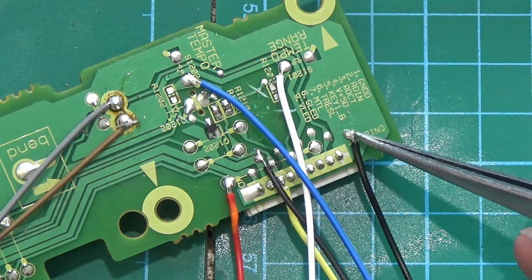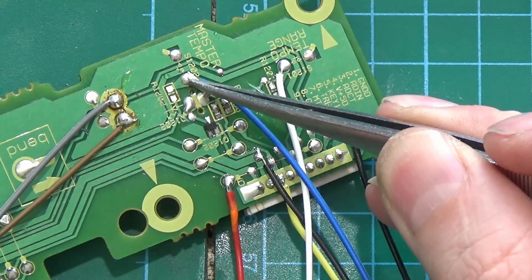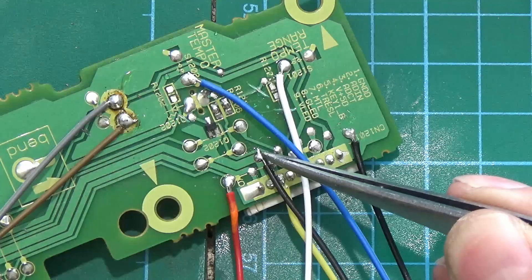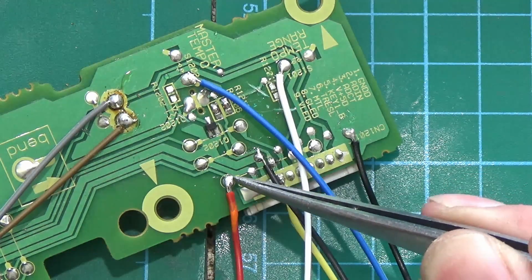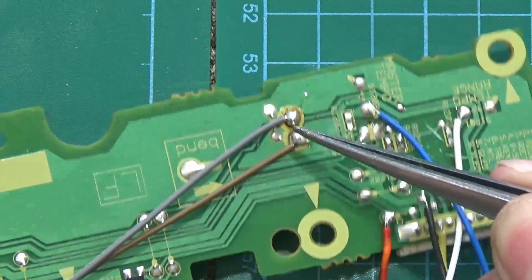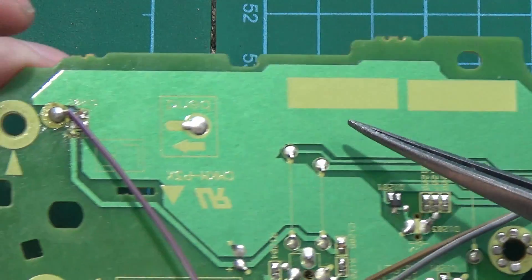So we have ground, we have the button wires, we have the 12 volt ground and the 12 volt in the wrong place, we have the master tempo LED, and then we have the connections for the pitch slider.